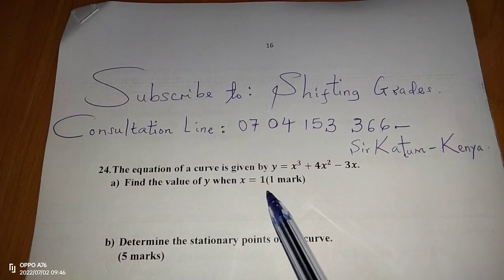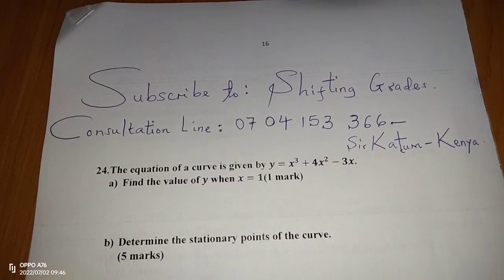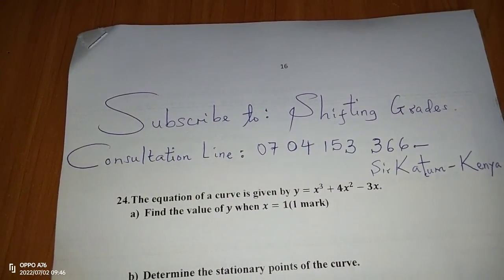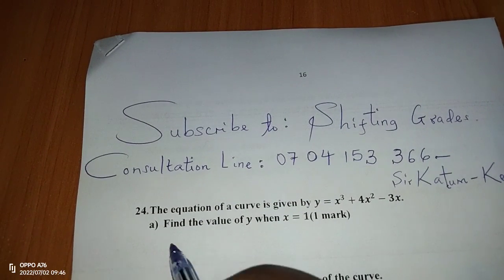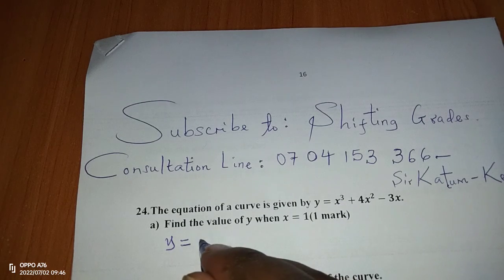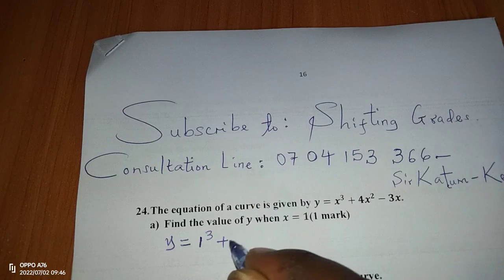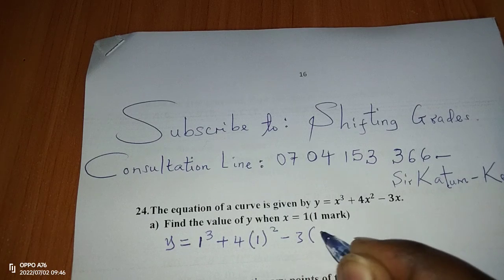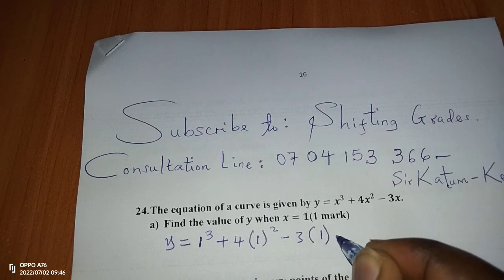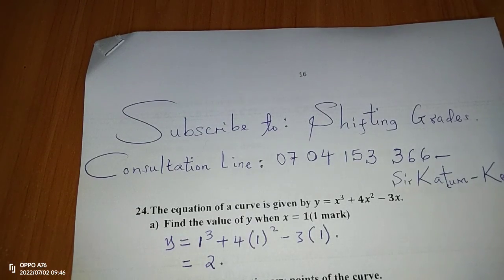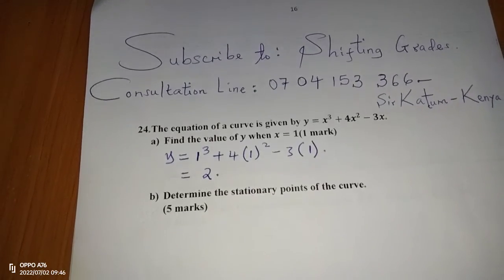To calculate the value of y when x equals 1, we use the equation relating y and x. We substitute: y equals 1 cubed plus 4 times 1 squared minus 3 times 1. Solving this gives us y equals 2. So when x equals 1, y equals 2.